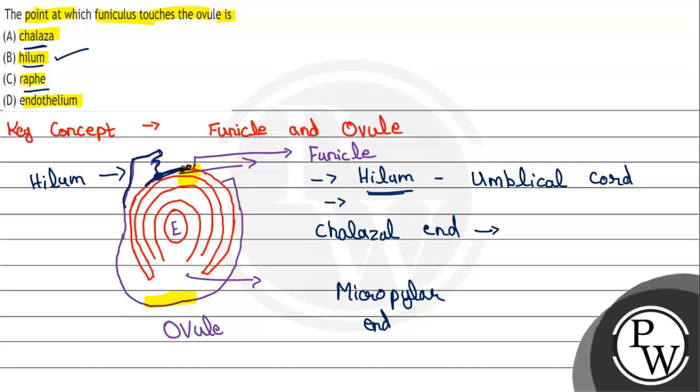If we talk about raphe, it basically shows the fusion of the funicle with the body of the ovule. Where the body is fusing with the funicle, that fusion is called the raphe. So this option is also wrong.